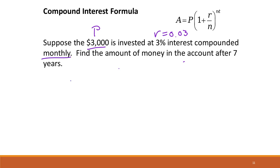It's compounded monthly, so our n is 12. And we find the amount of money in the account after 7 years, so our t is 7. So we just fill in our formula. A is $3,000 times 1 plus 0.03 over 12 to the 12 times 7.